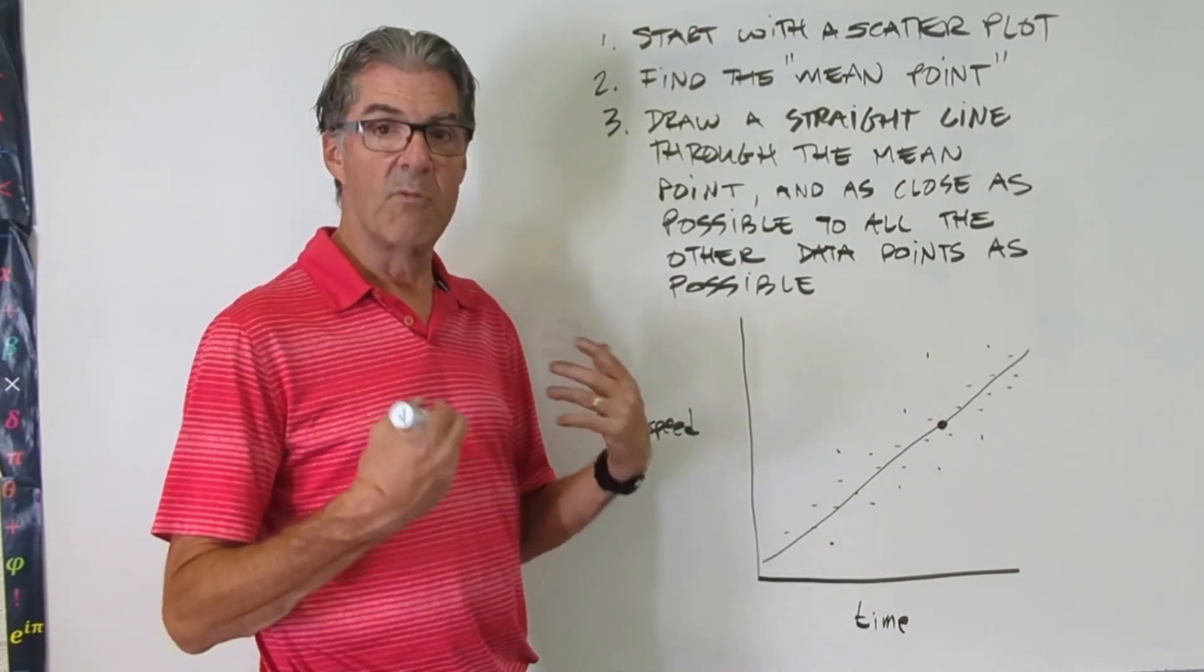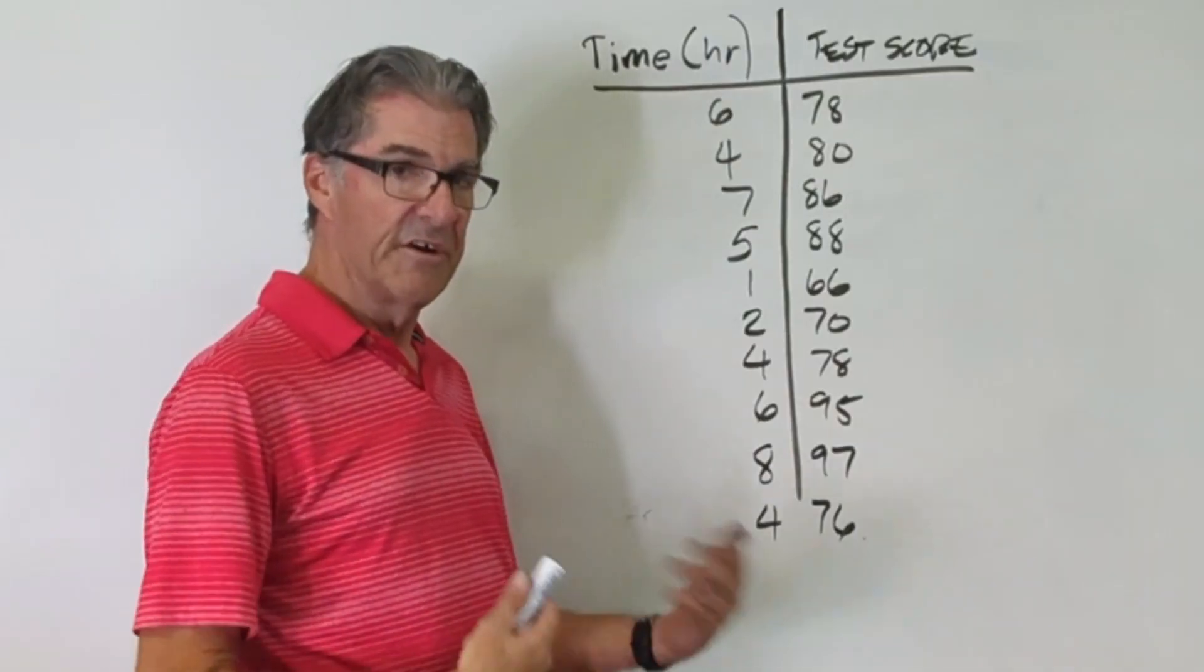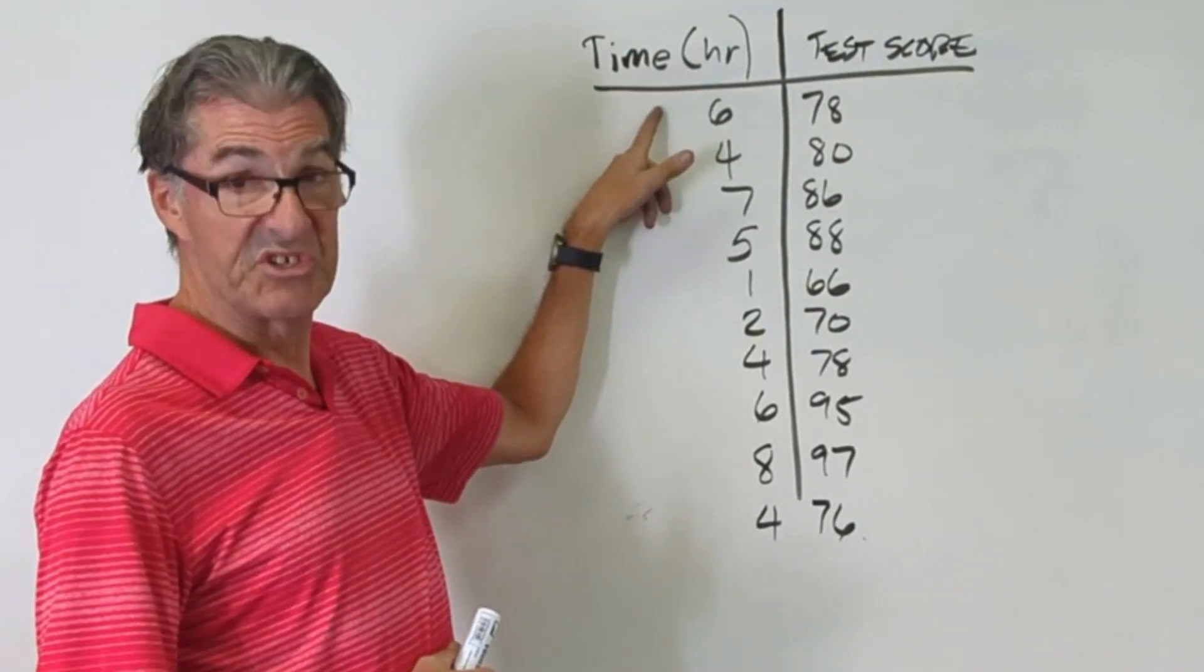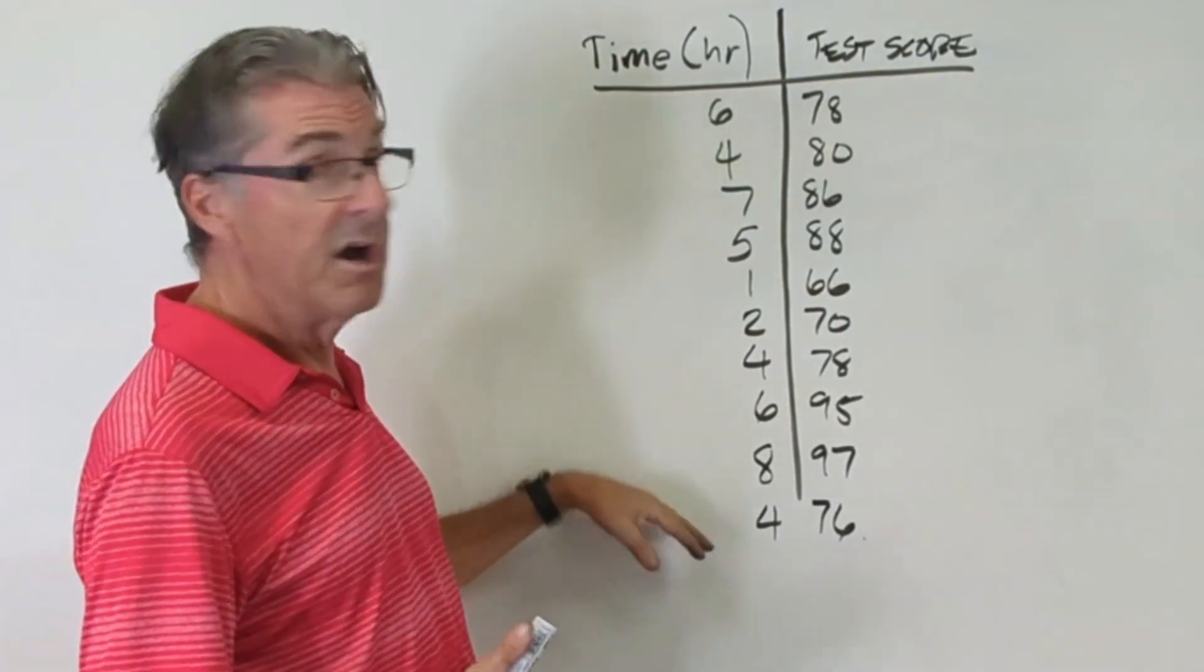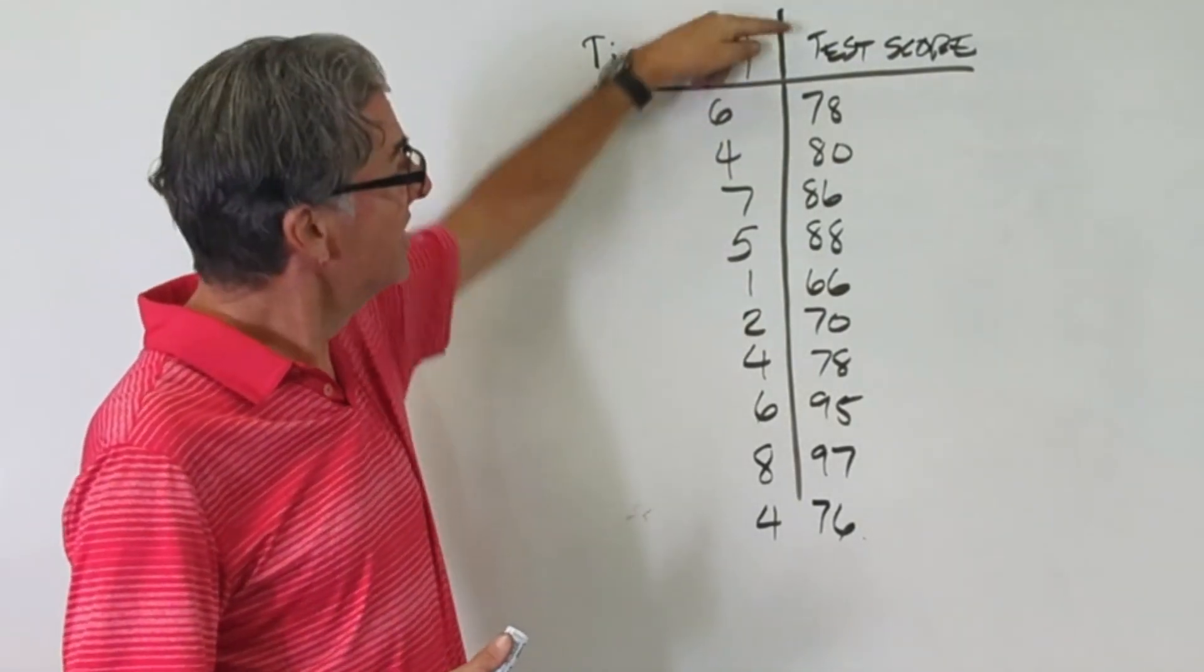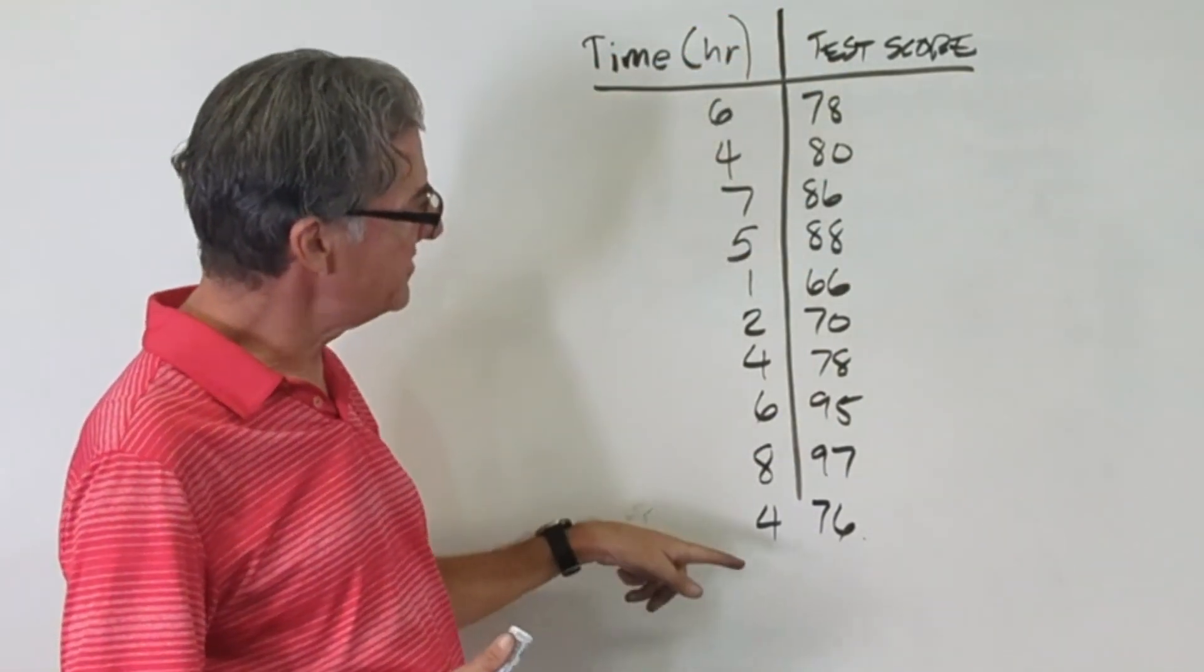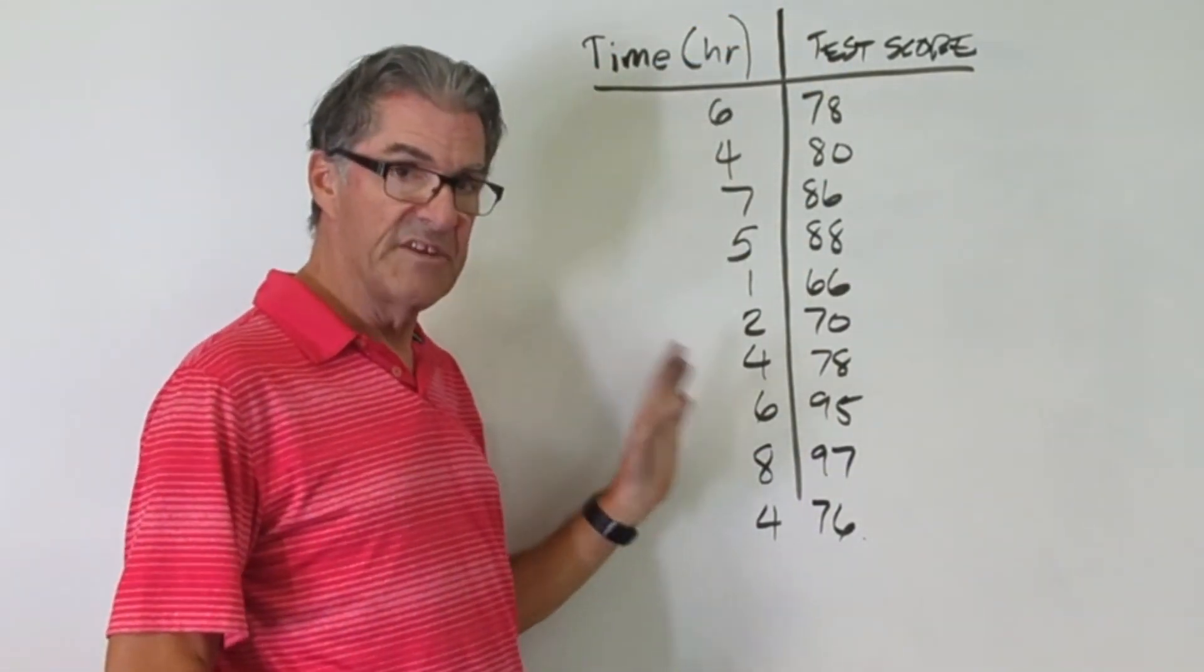Now let's get into the details and do it more mathematically. Here is a possible scenario where we have time spent studying in hours graphed against or put against the test score. So we have these various test scores and the hours spent studying.